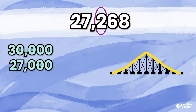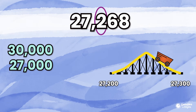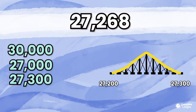Let's move on to the hundreds. There's a 2 in the hundreds place. We're going to look at the place value to its right, which is the tens place. There's a 6 in the tens place. Are we going to round up to 27,300 or down to 27,200? That's right — we're going to round up to 27,300.